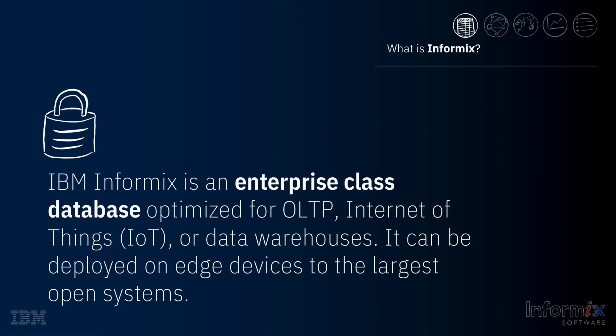IBM Informix is a highly available and scalable database server with technologies that distinguish it from other products. It has a unique architecture that allows it to run on systems as large as Z Linux mainframes to network edge devices as small as a Raspberry Pi. It is used worldwide by companies in the Fortune 10 list to individual Internet of Things tinkerers.